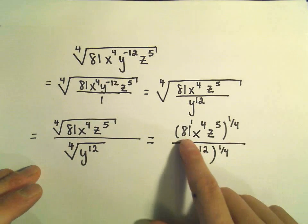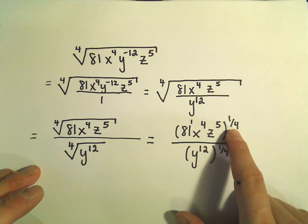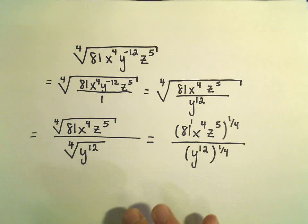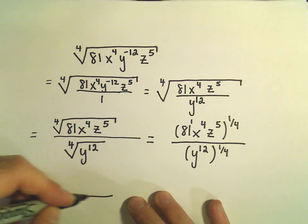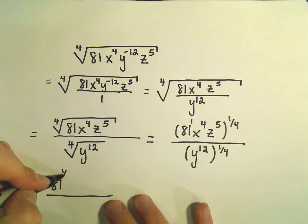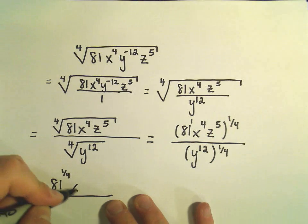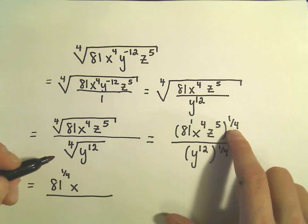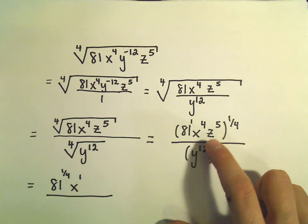Okay, so recall if things are being multiplied in parentheses, when we have an exponent on the outside, we just multiply corresponding exponents. So I'll have 81, if I take one times a fourth, I'll simply get one-fourth. If I take x to the fourth, so I've got a four times a fourth, which would be four-fourths or to the first power.